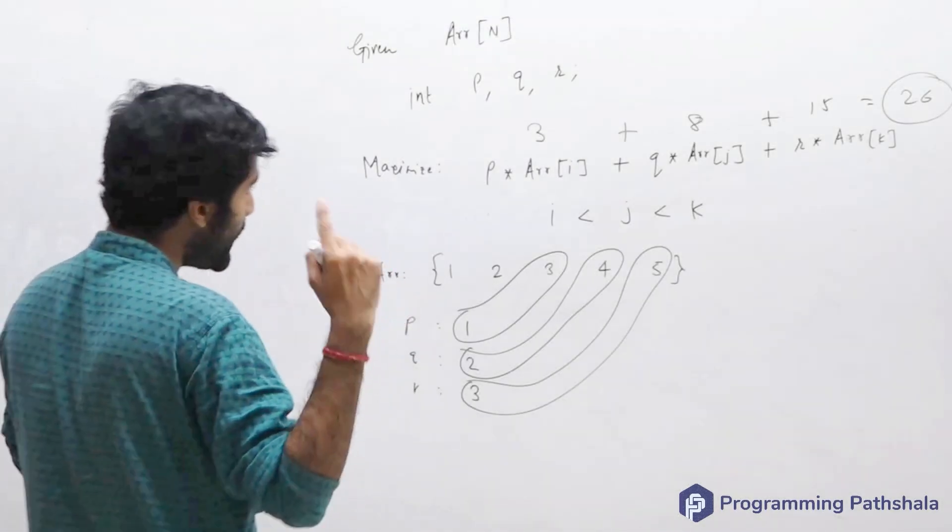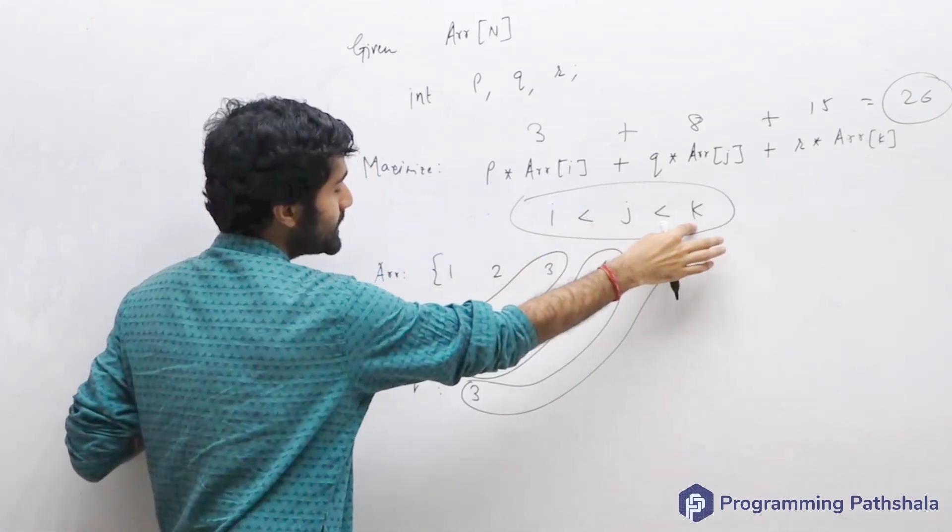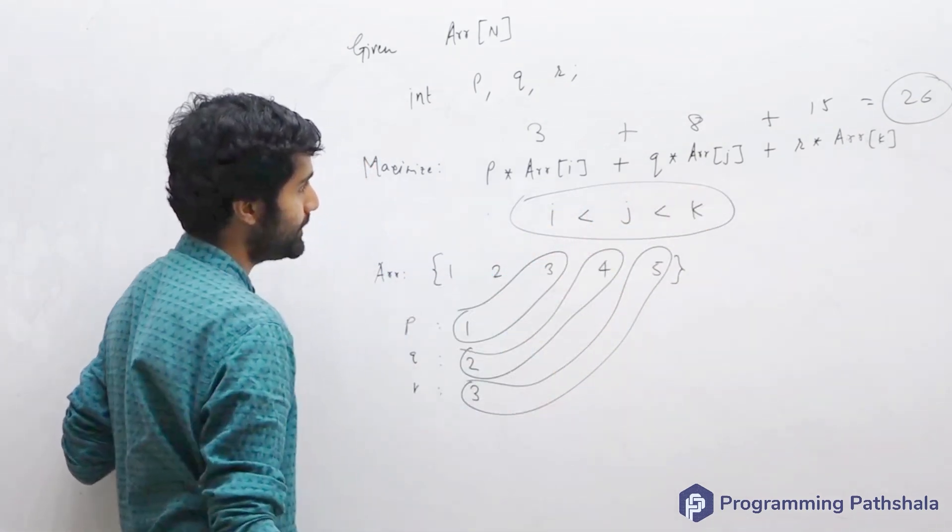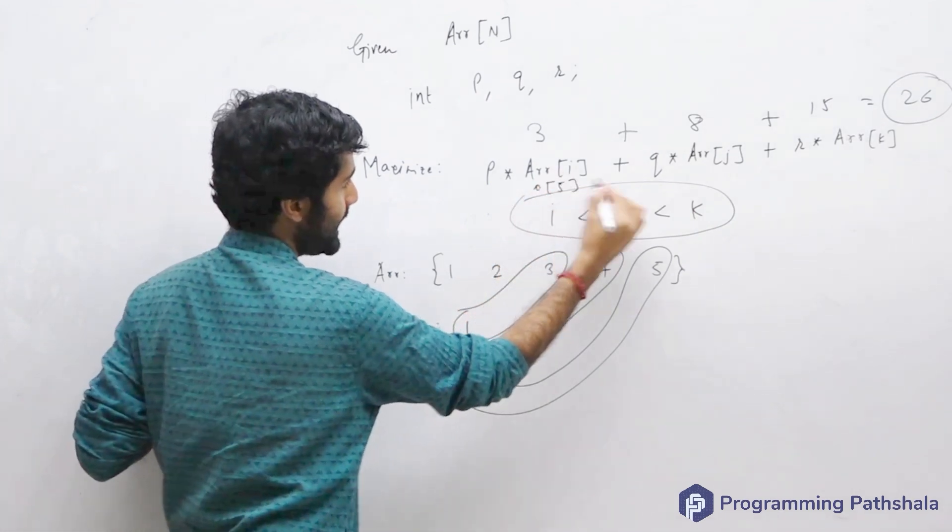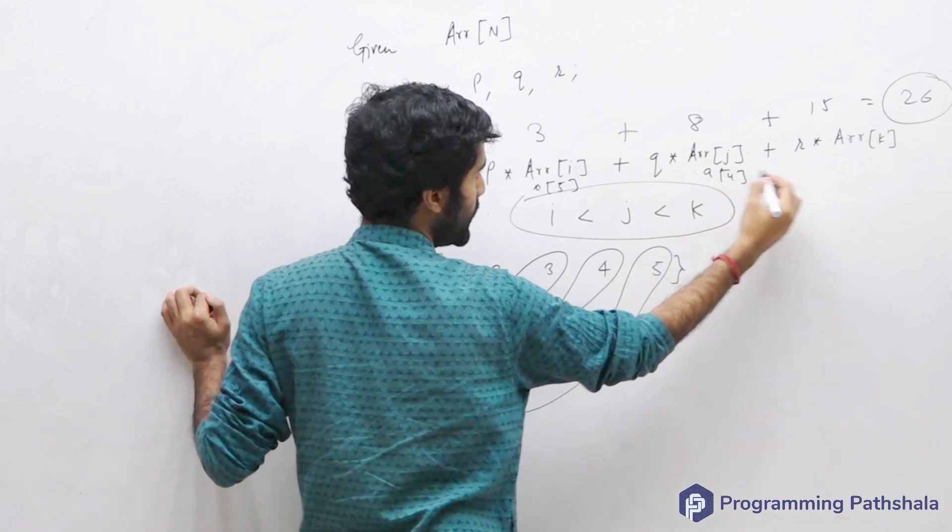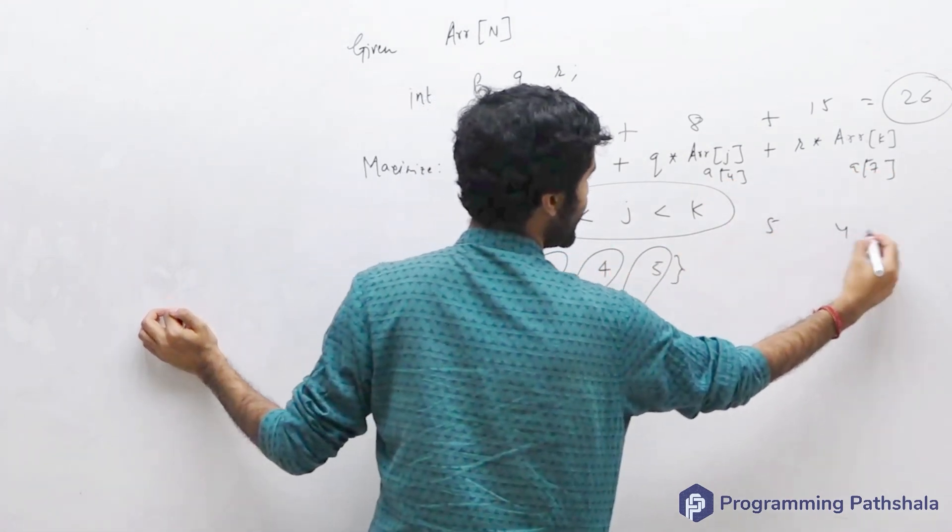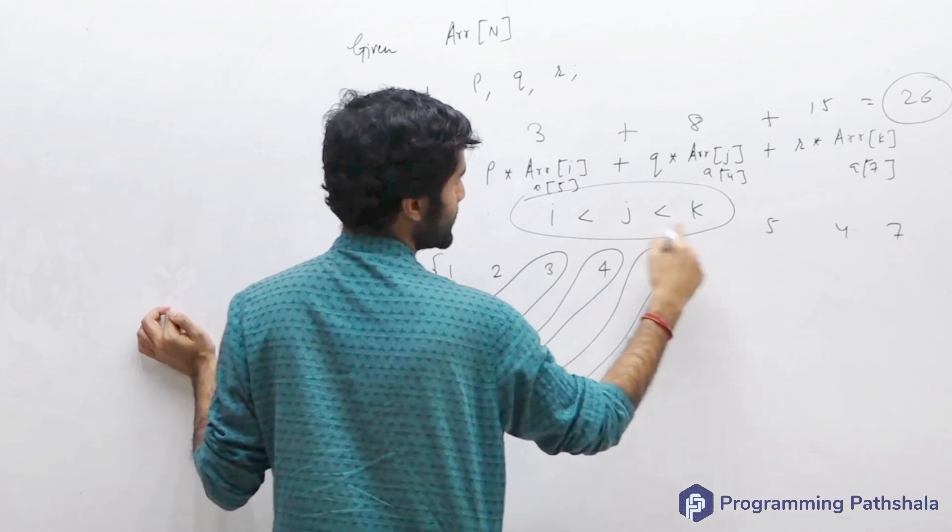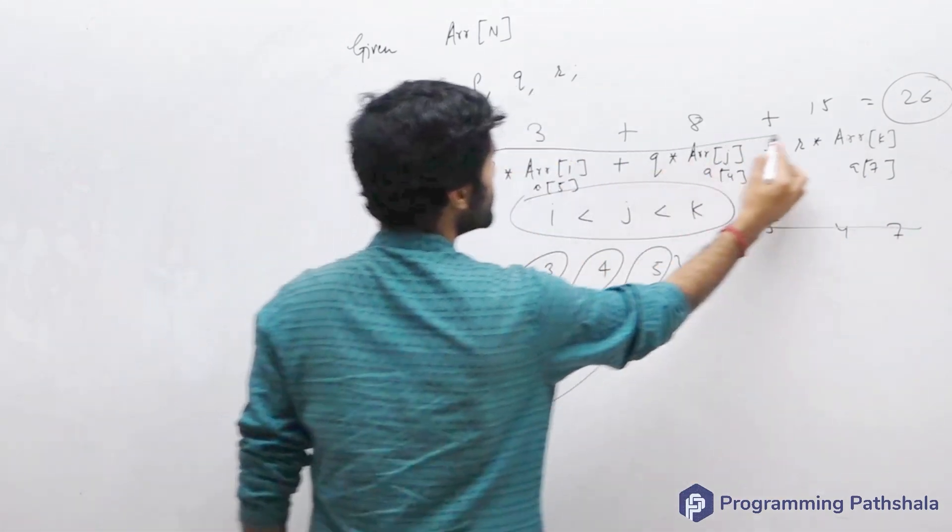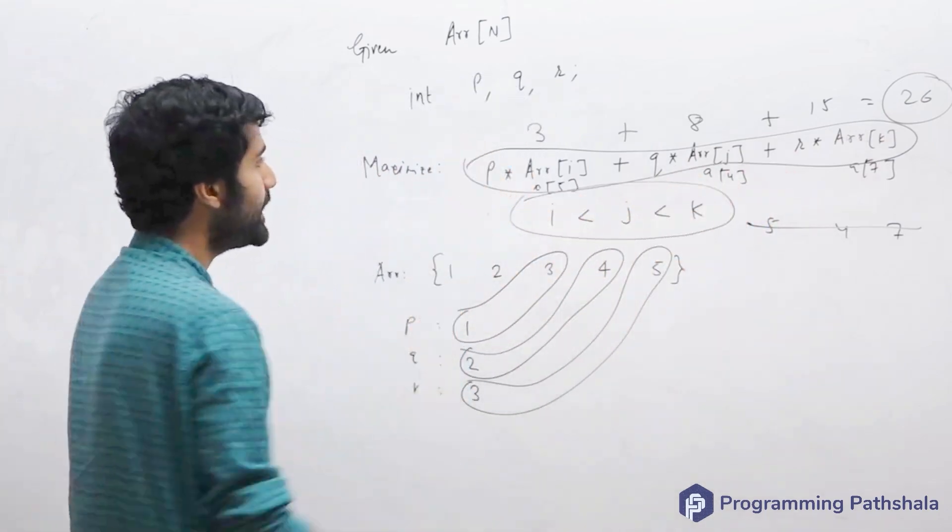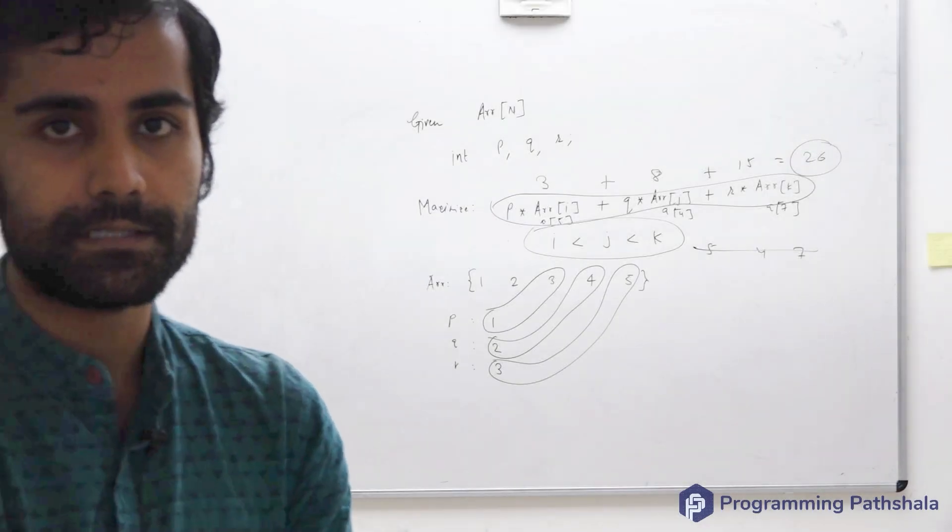An important thing to be kept in mind is their indices should also be sorted. You cannot choose this one as a[5] and this one as a[4] and this one as a[7], because 5, 4, and 7 do not obey this constraint. You have to keep this in mind and then maximize this particular expression. Any thoughts on the approaches that strike your mind immediately?